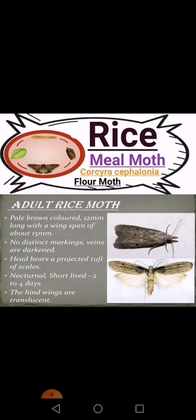It is nocturnal, appearing usually at night and remaining dormant during the daytime. It is short-lived — its adult life ranges only 2 to 4 days. The hind wings are translucent; the insect contains two pairs of wings, with the upper forewings and the lower hind wings being translucent.